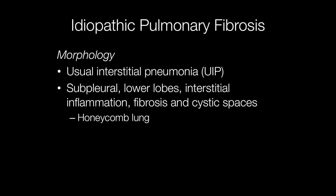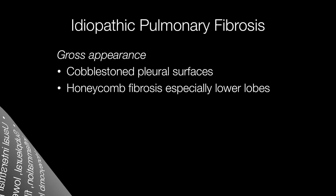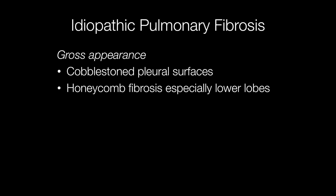So the morphology of idiopathic pulmonary fibrosis is that of usual interstitial pneumonia. The part of lung affected most frequently is the subpleural area — that is the areas beneath the lining of the lungs, and particularly in the lower lobes. There is also interstitial inflammation, that is inflammation of the alveolar walls, with fibrosis and cystic spaces developing, resulting in the honeycomb lung appearance. Because of this, the cut surface of the lung has a honeycomb appearance because of the fibrosis.